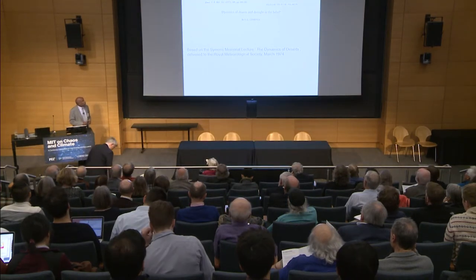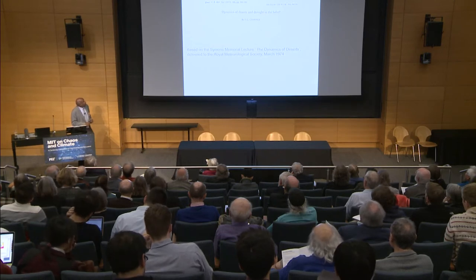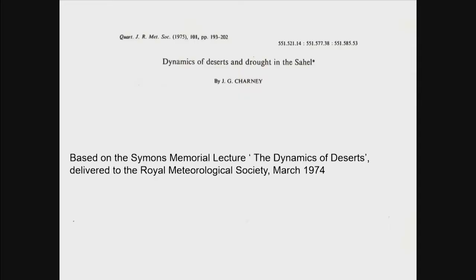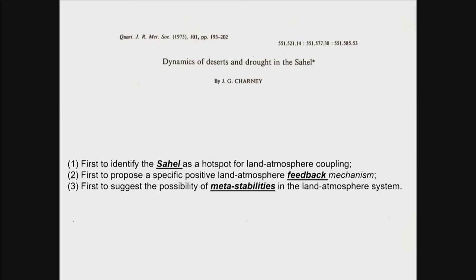The paper I would like to review with you is a paper on the dynamics of deserts and droughts in the Sahel by Chani in 1975, published in the Quarterly Journal of the Royal Meteorological Society. It's based on a memorial lecture on the dynamics of deserts delivered at the Royal Society in 1974. I think that was a very significant paper. This morning I checked the citations — it's in the Web of Science, ranked number one or two among Chani's papers.